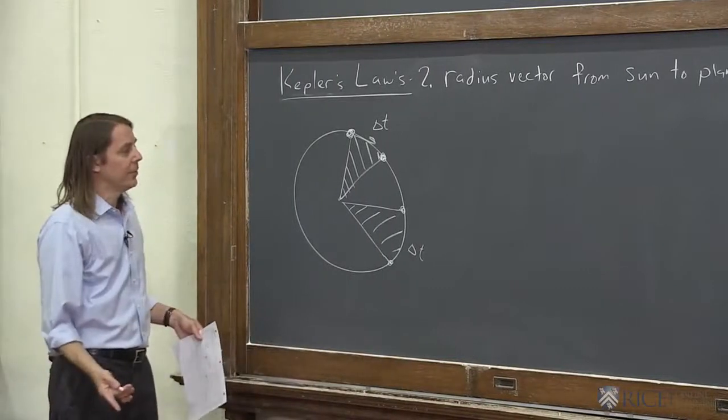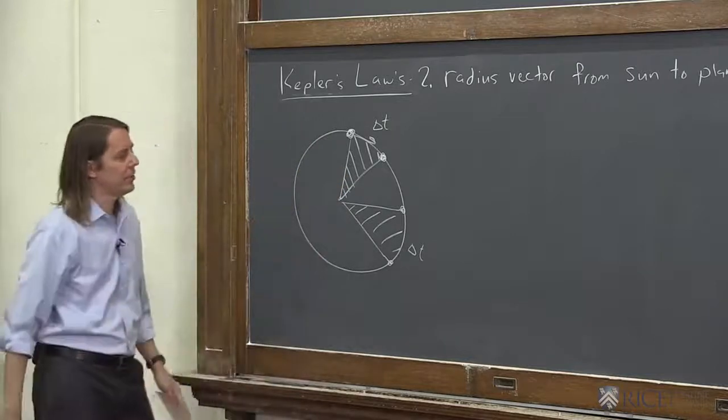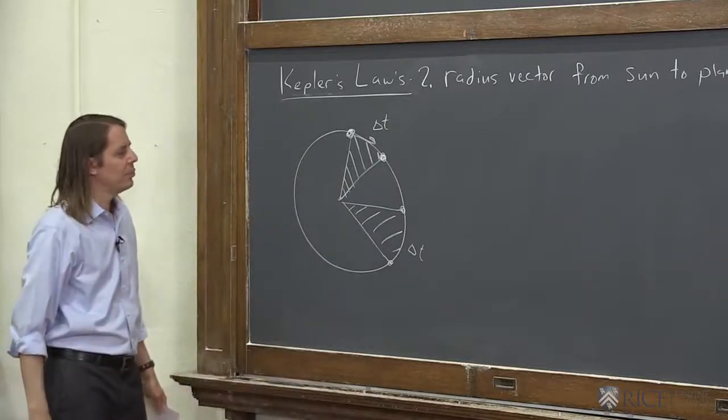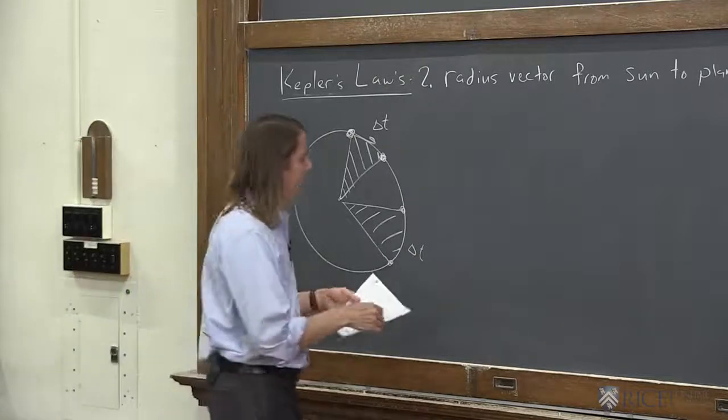So the speed you get from, if you have a constant centripetal force, then there's no reason the speed would change, and therefore you sweep the same area. But what's a little bit different is if you have an ellipse.